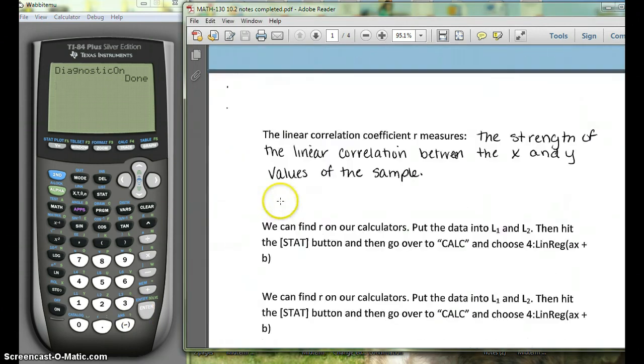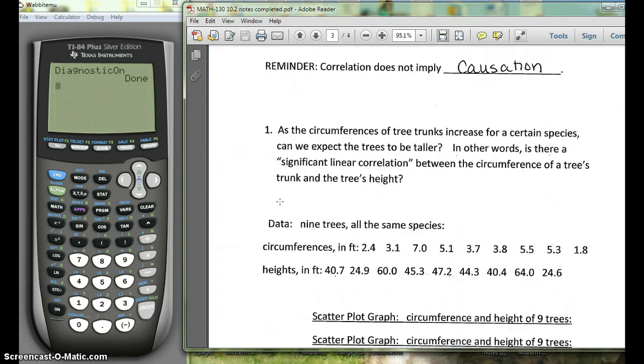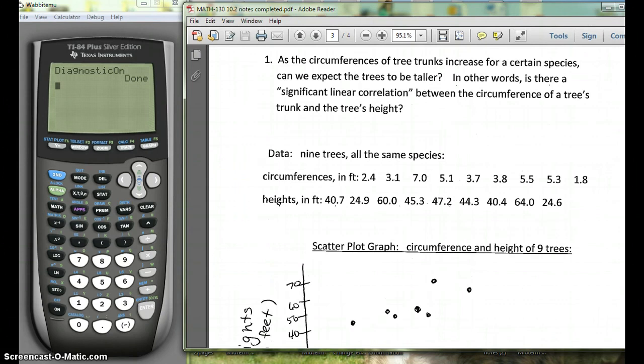We're going to start with this problem about trees. As the circumference of tree trunks increase for a certain species, can we expect the trees to be taller? In other words, is there a significant linear correlation between the circumference of a tree's trunk and the tree's height? We have the circumferences and heights for nine trees.